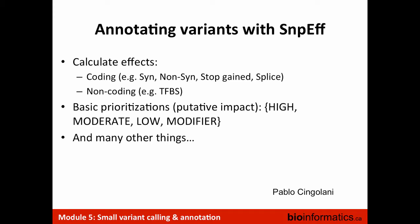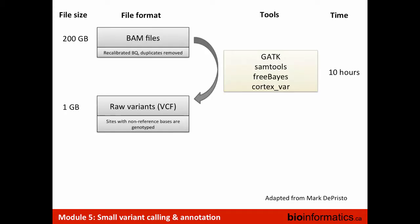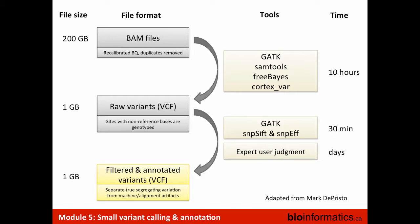Doing annotation of variants — and there are lots of tools — one we're going to use in the practical is called SNPEFF, and it does that. It's going to annotate your variants to say whether it's coding or non-coding. For coding variants, it annotates whether it's a synonymous change, non-synonymous change, stop-gain, and so on, and gives basic prioritization by impact: high, moderate, or low. So what we're going to be doing in the practical is going from BAM files to raw VCF using GATK, then using GATK to filter and SNPEFF to annotate the variants. Time to actually do it.